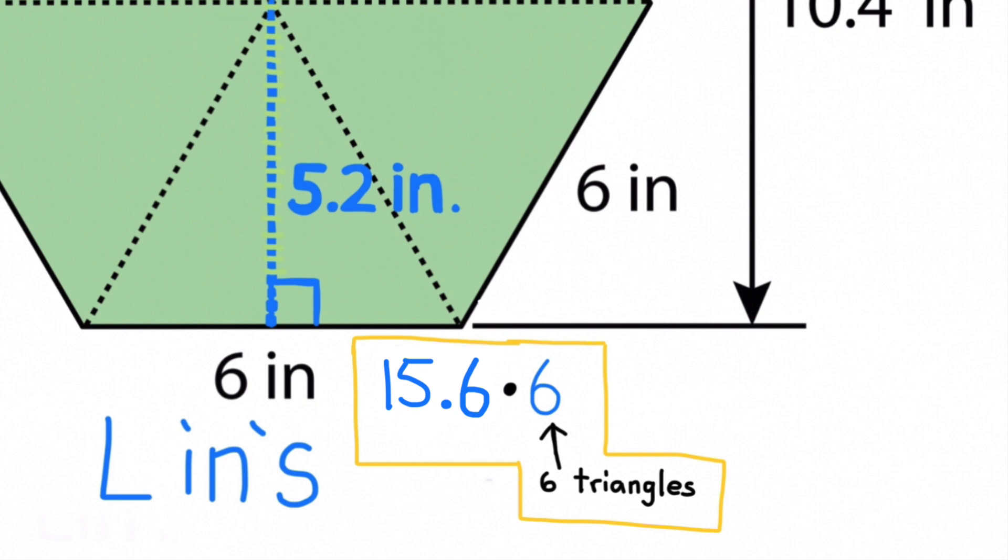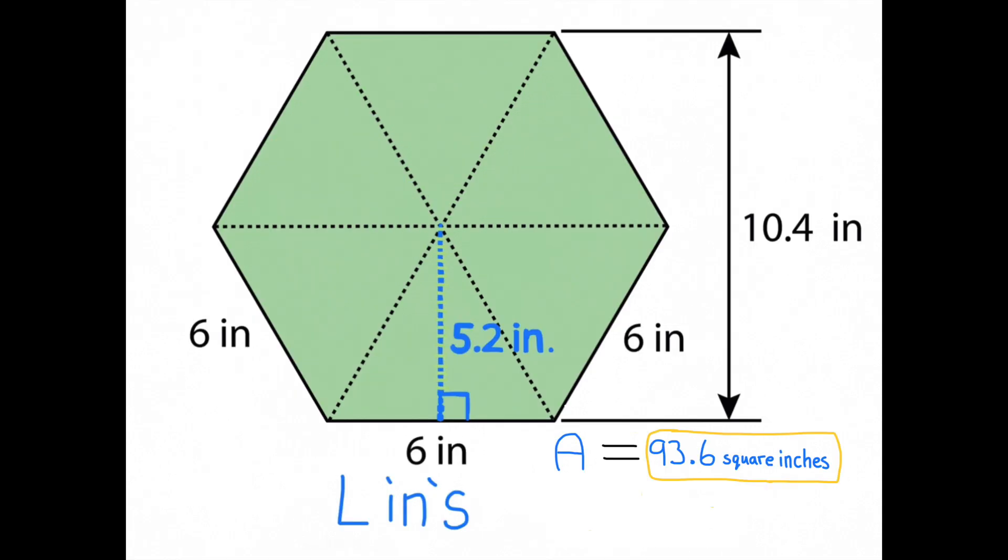And since there's six of these triangles, we need to multiply 15.6 times 6. 15.6 times 6 equals 93.6. So the area of this hexagon is 93.6 square inches.